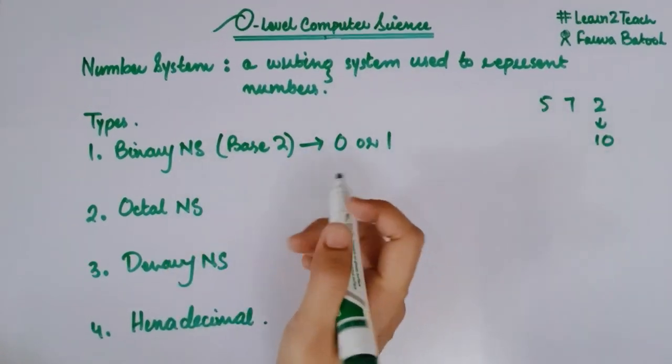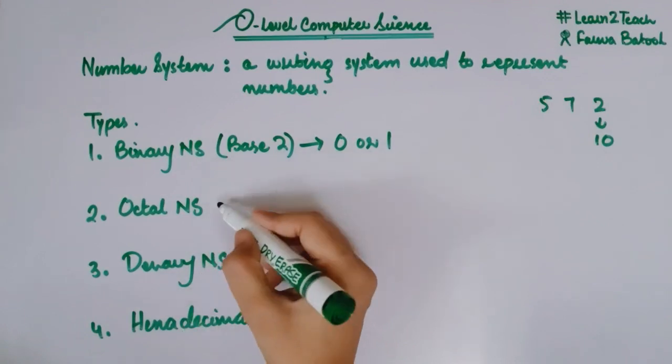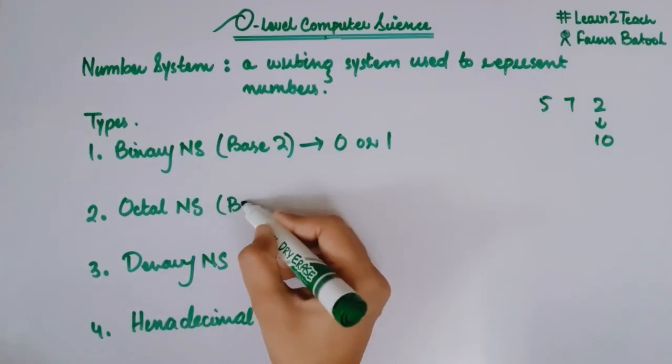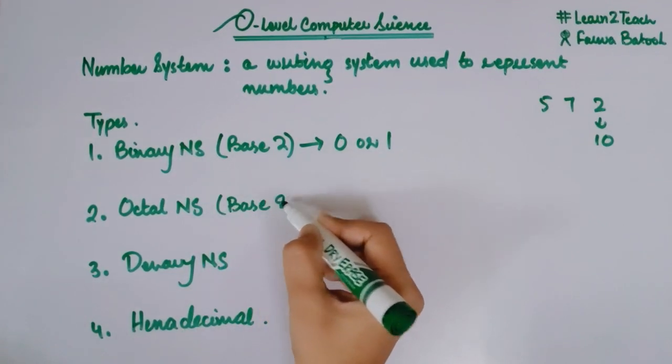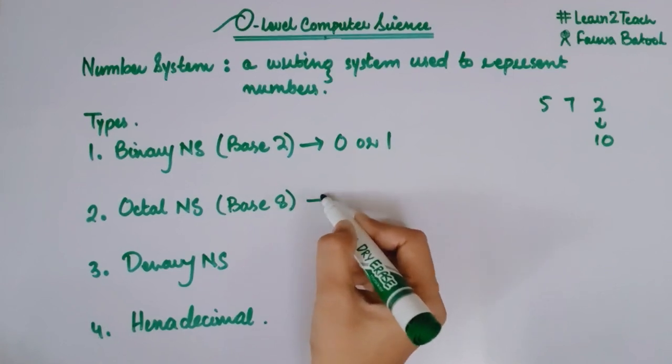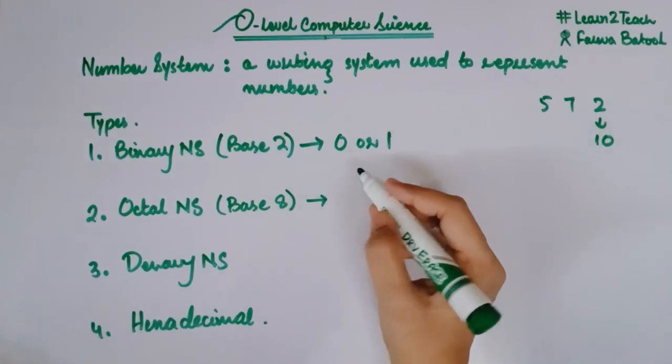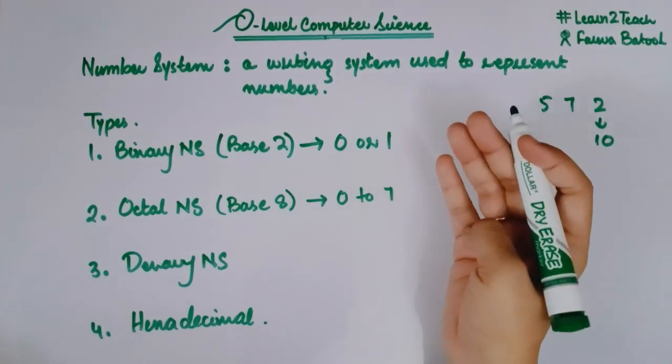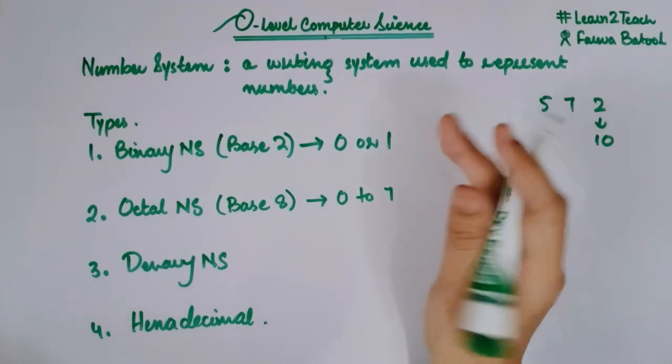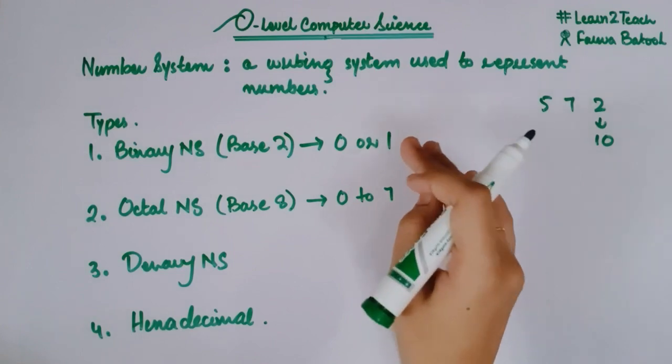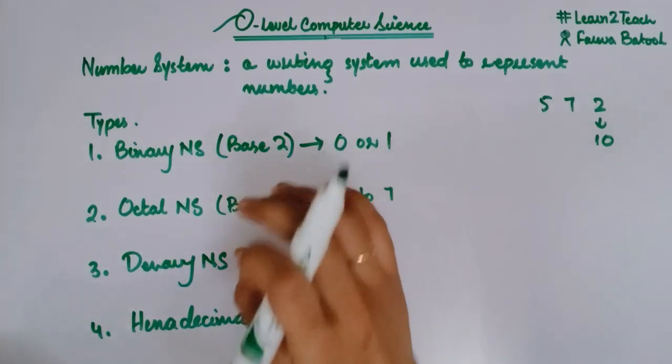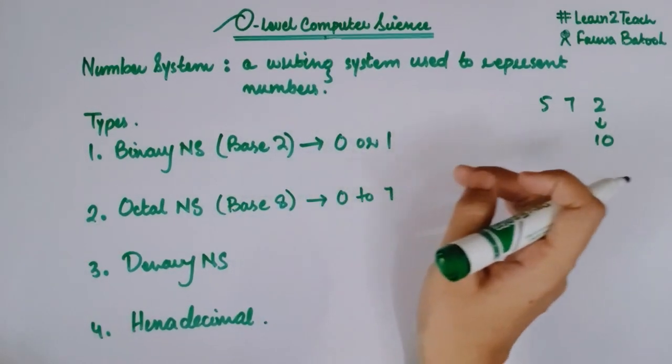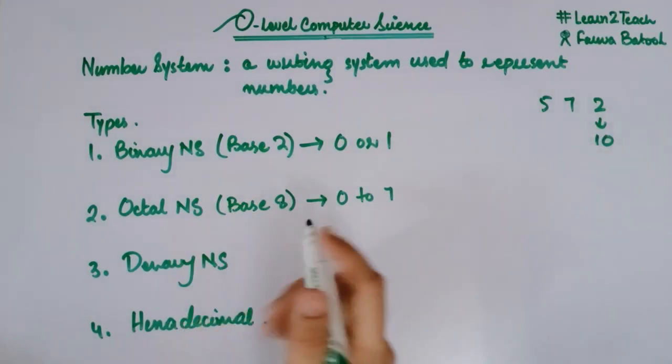Now moving towards octal number system. Octal number system is also known as base two number system. Why? Because here I am going to have eight digits to represent any number. And this is from zero to seven. Zero, one, two, three, four, five, six, seven. So these are basically eight digits I am going to use in octal number system in order to represent any of the number.